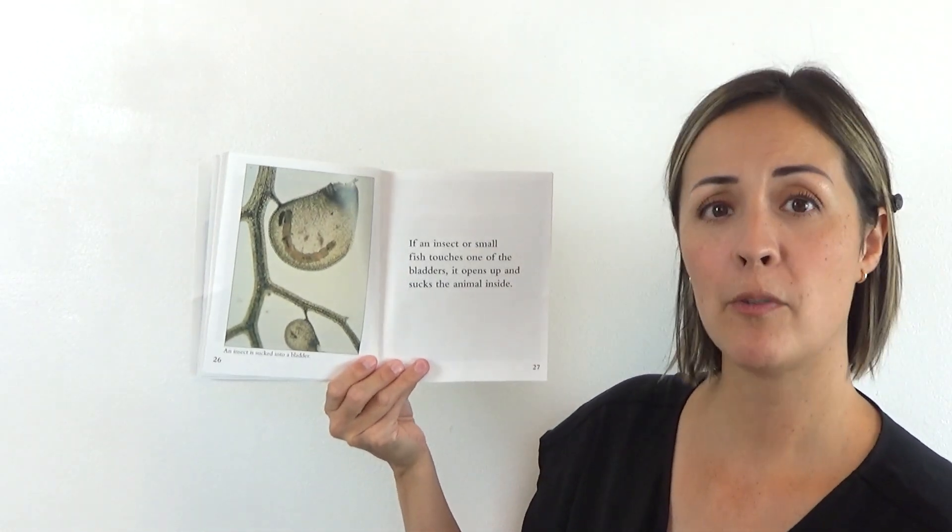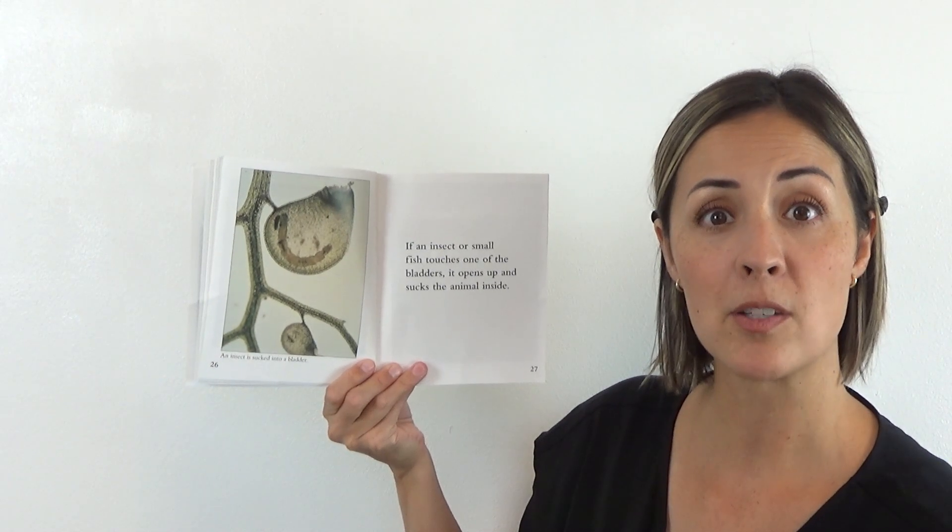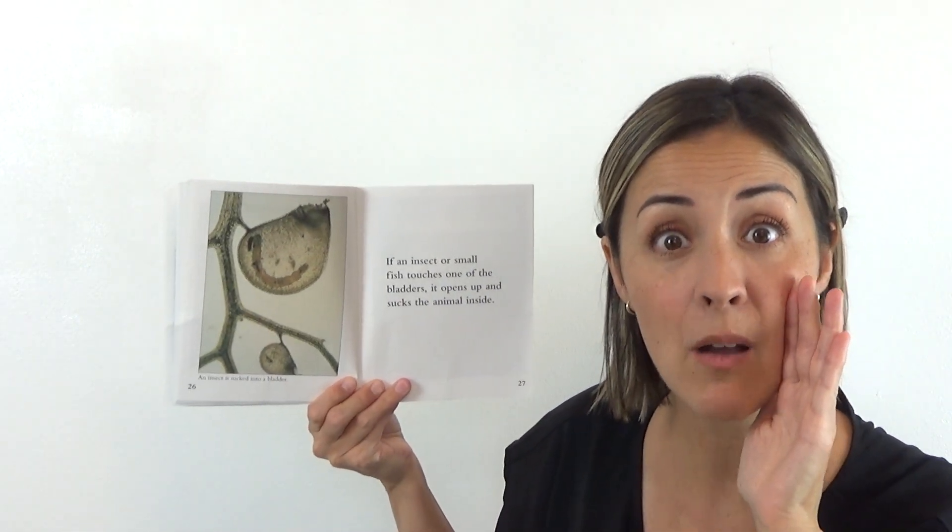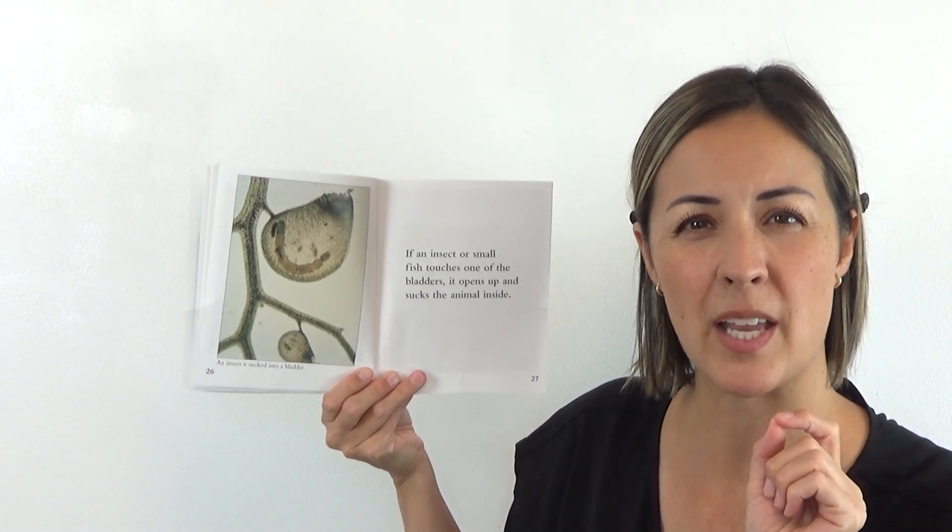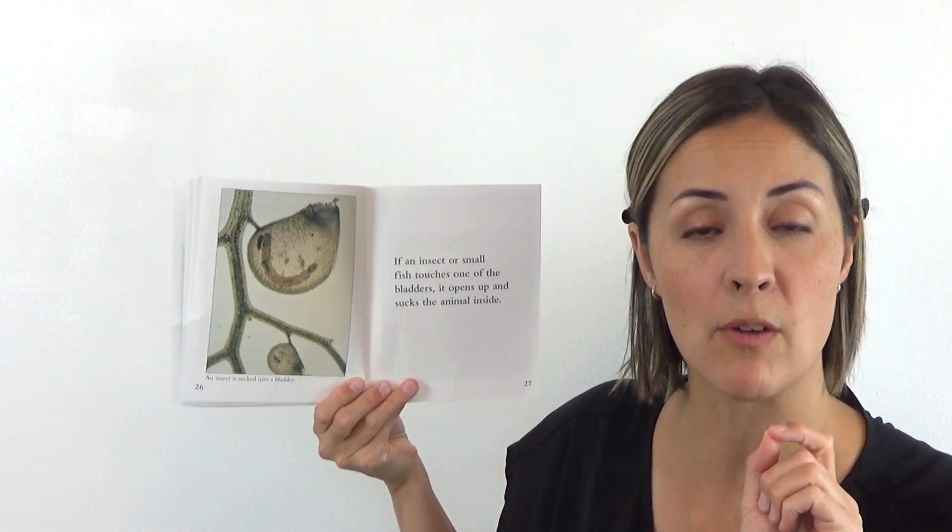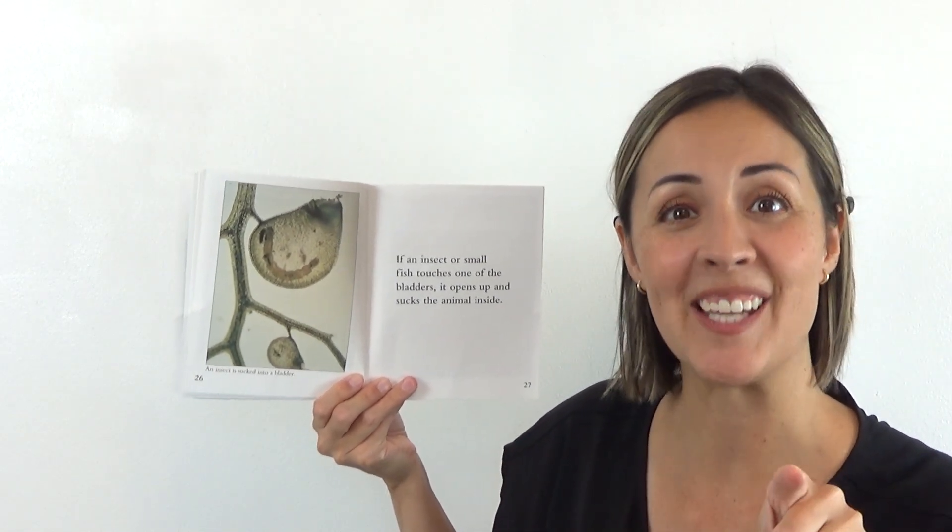If an insect or small fish. Wait, did you hear that? Not just an insect, but also a small fish. Bladderworts eat insects and fish. I wonder, could you say that whole sentence? Starting bladderworts eat. Ready? Bladderworts eat insects and fish. Good.